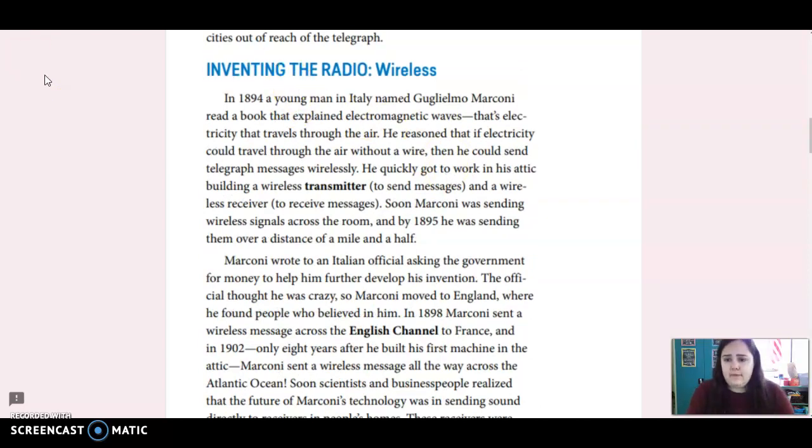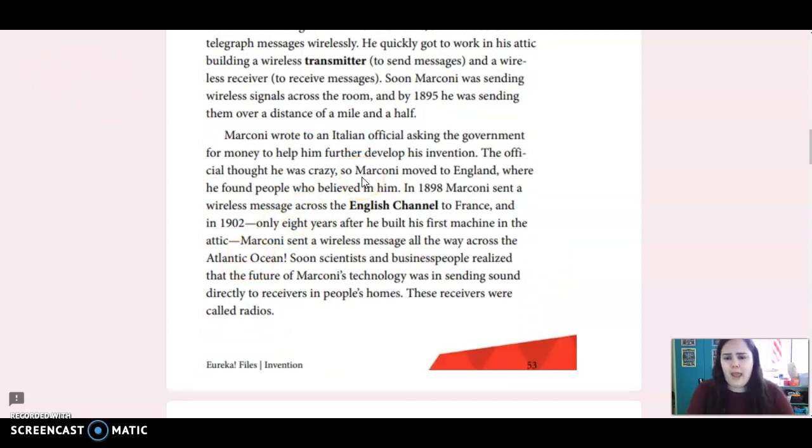In 1894, a young man in Italy named Guglielmo Marconi read a book that explained electromagnetic waves - that's electricity that travels through the air. He reasoned that if electricity could travel through the air without a wire, then he could send telegraph messages wirelessly. He quickly got to work in his attic building a wireless transmitter to send messages and a wireless receiver to receive messages. Soon Marconi was sending wireless signals across the room, and by 1895 he was sending them over a distance of a mile and a half.